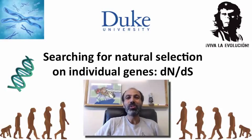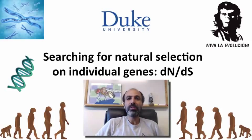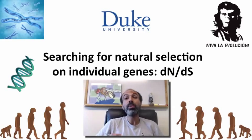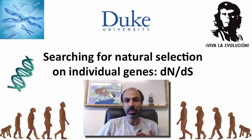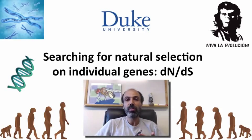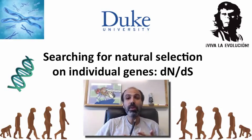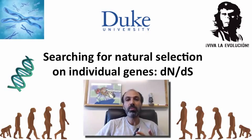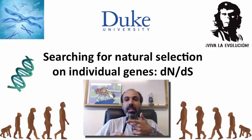Hello and welcome back to Introduction to Genetics and Evolution. In the previous video we talked about trying to identify differences between species, focusing on humans and chimps in particular, that may have spread by the action of natural selection and contrasting those with ones that may have spread by drift. There are several challenges associated with this. The way we address these challenges is by contrasting non-synonymous changes and synonymous changes.